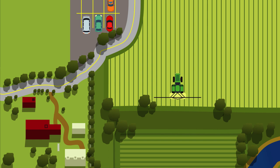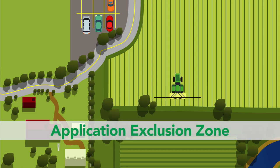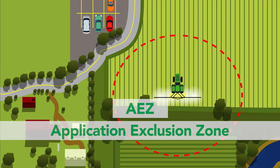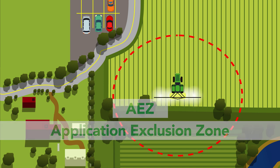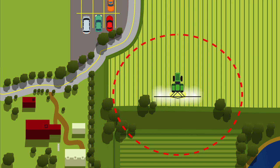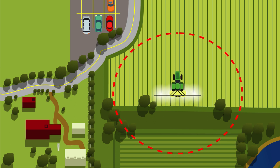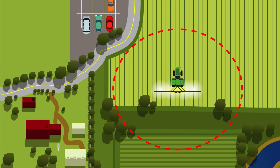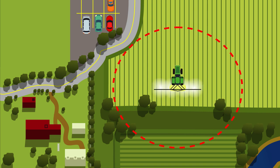As a handler, you must know the size of the Application Exclusion Zone, or AEZ, for applications made outdoors. The AEZ is a distance around the application equipment that varies in size depending on the type of application being made and the spray quality of the nozzles being used.